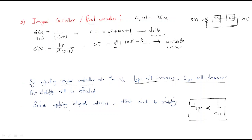So before applying the integral controller to the system, first check the stability of the system. After confirming stability, then apply the integral controller. Whenever we add the integral controller, the type increases, and whenever the type increases, steady-state error decreases, because type is inversely proportional to steady-state error.